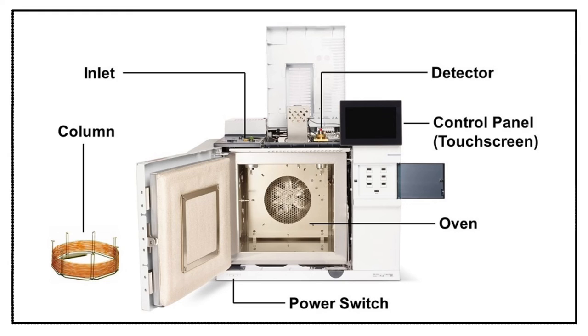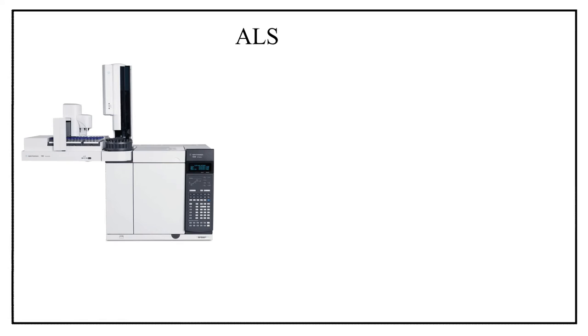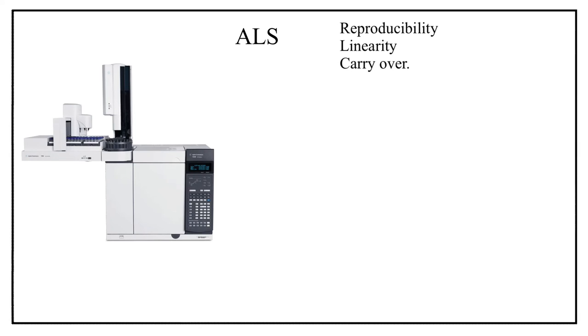Let us now know about all the calibration parameters one by one. Firstly, ALS — Automatic Liquid Sampler — is calibrated with the help of three calibration parameters: reproducibility, linearity, and carryover. Now comes the HSS, which means Headspace Sampler, and HSS is calibrated with the help of four calibration parameters.